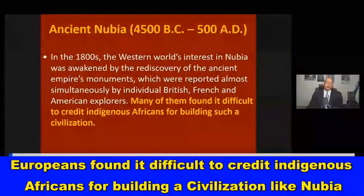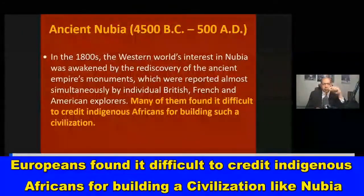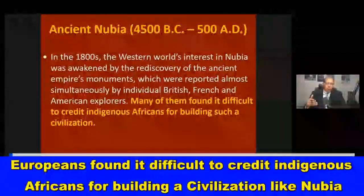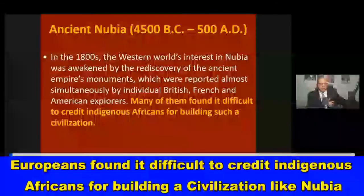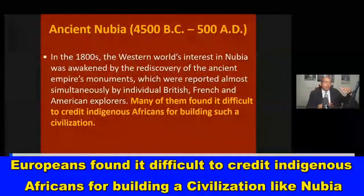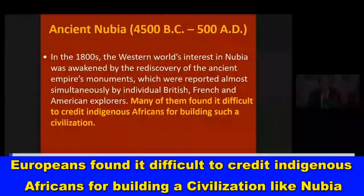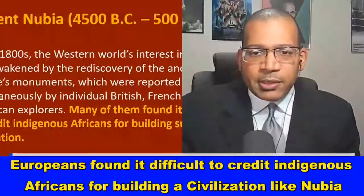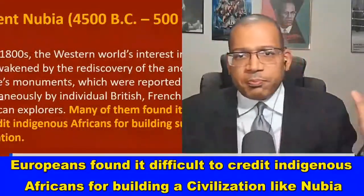In the 1800s, the Western world's interest in Nubia was awakened by the rediscovery of ancient monuments. Many explorers found it difficult to credit indigenous Africans for building such a civilization, so they tried to say the Nubians were white — just as they tried to say the ancient Egyptians were white, or 'brown-skinned Caucasians,' or Semites. Anything but Black Africans. They could not admit these were Black African people.